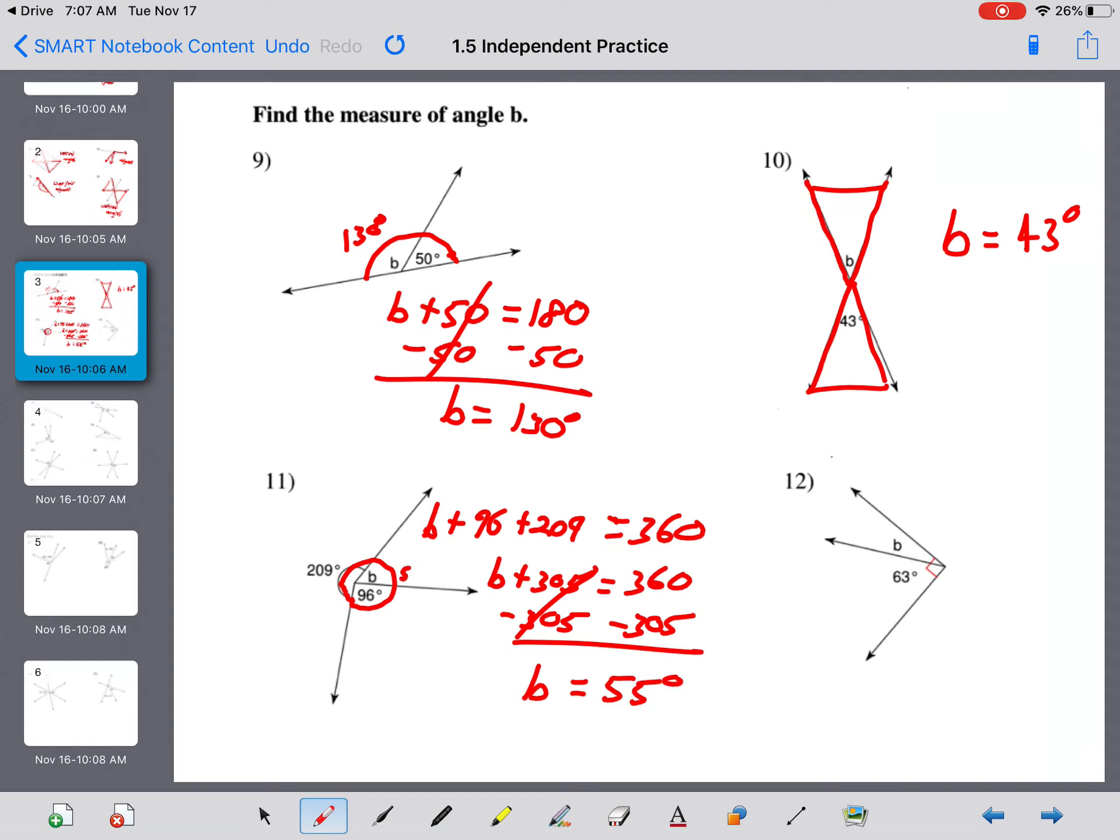And B equals 360 minus 305 is 55 degrees. So squeeze your 55 degrees in there. For number 12, I see in the corner here is that little box signifying that these are complementary or right angles. So B plus 63 equals 90 minus 63 on both sides. And B equals 90 minus 63, which is 27 degrees.